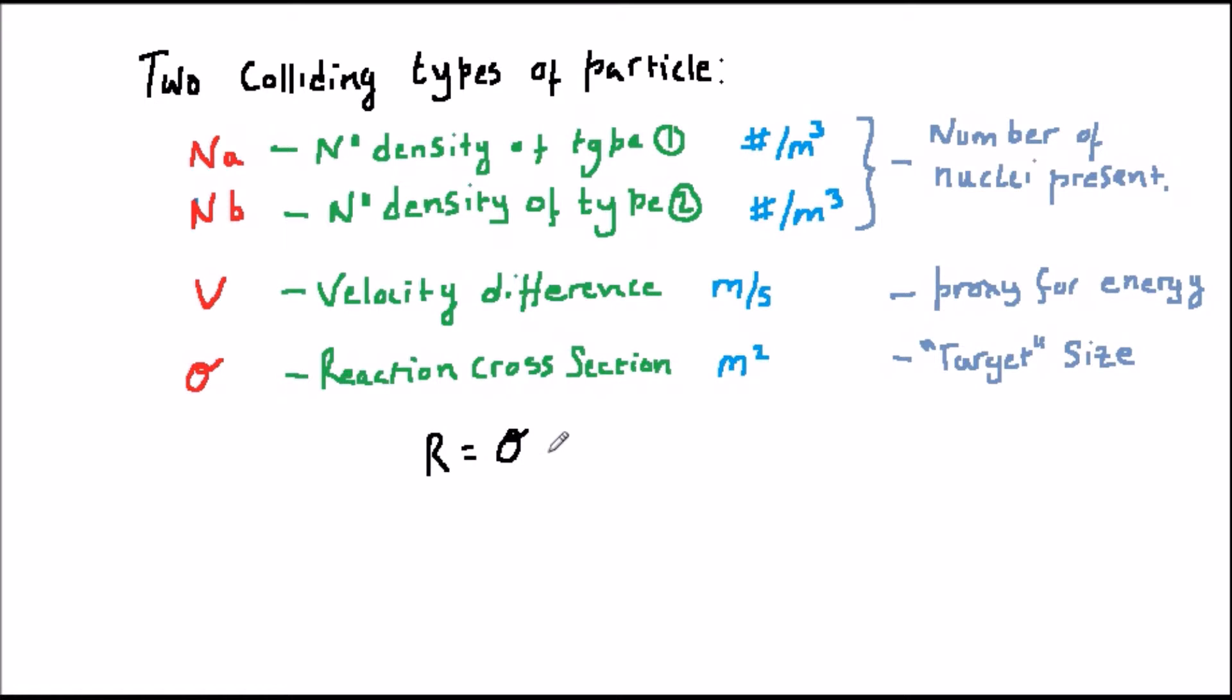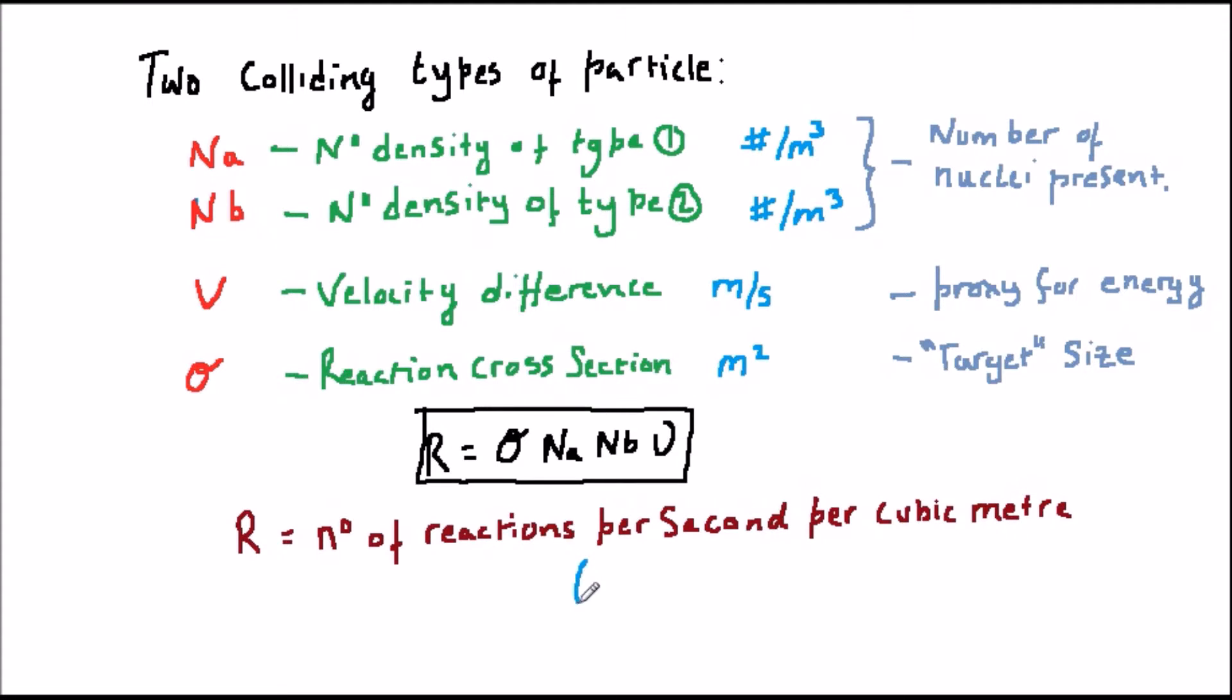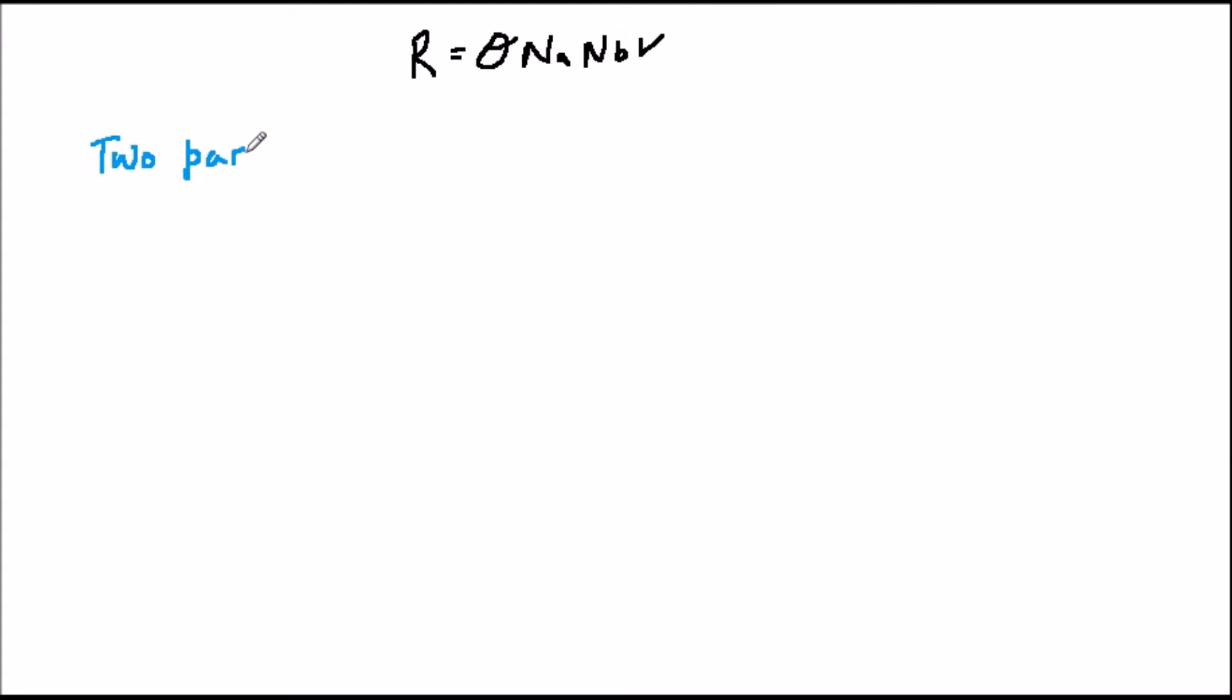All these factors are shown in the formula on the screen. R is equal to sigma times n subscript a times n subscript b times v. This result, R, is the number of fusions per cubic metre per second. If the two fusing particles are coming in from different directions at different angles and different speeds, then the velocity v is the magnitude of the difference of their velocity.